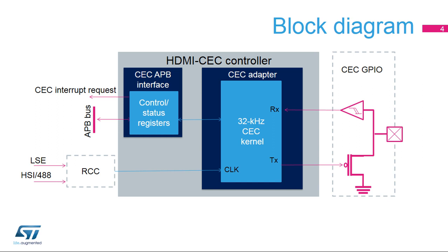The controller consists of a CEC adapter and a CEC Advanced Peripheral Bus or APB interface. The CEC adapter provides functions such as frame decoding and checking, while the CEC APB interface manages the control and status registers, data in-registers and data out-registers, and synchronous interrupt requests.